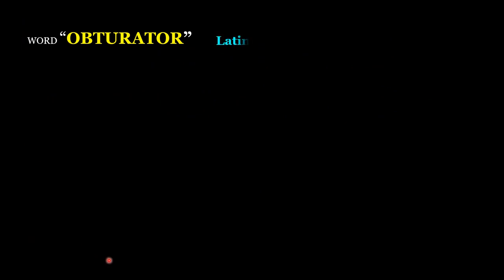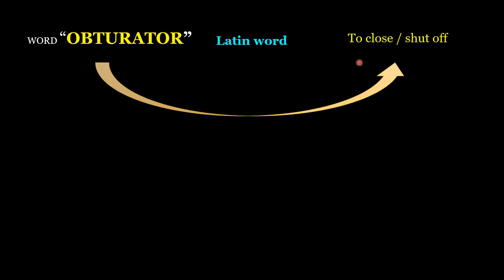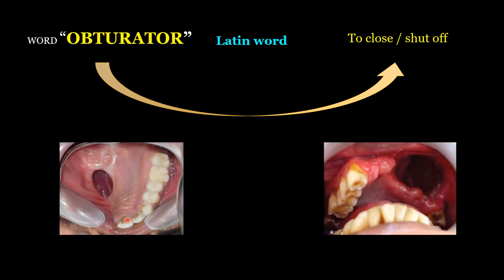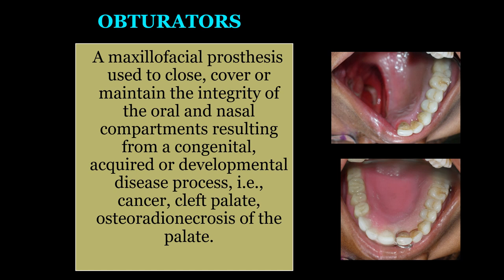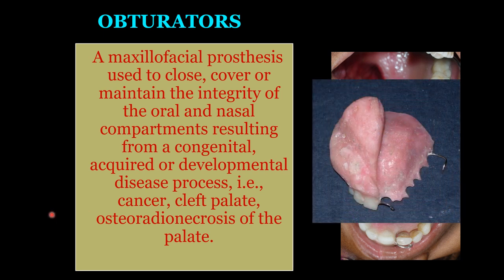The word obturator comes from a Latin word which means to close or shut off. So this type of prosthesis is mainly used to close an opening that may be acquired or congenital of the palate. The definition: it is a maxillofacial prosthesis used to close, cover, or maintain the integrity of the oral and nasal compartments resulting from a congenital, acquired, or developmental disease process — like cancer, cleft palate, or osteoradionecrosis of the palate.